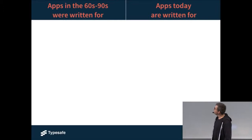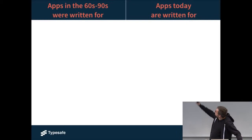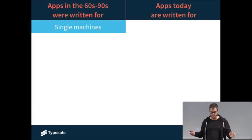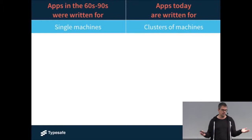On the left-hand side we have the context and requirements of apps written in the 60s, 80s, and 90s, perhaps even early 2000s. On the right-hand side we have the requirements of applications today. Applications used to be written for single machines — you just deployed your application on a single machine and you were basically done. But today, most applications are deployed on clusters of machines. Cloud computing is the norm.